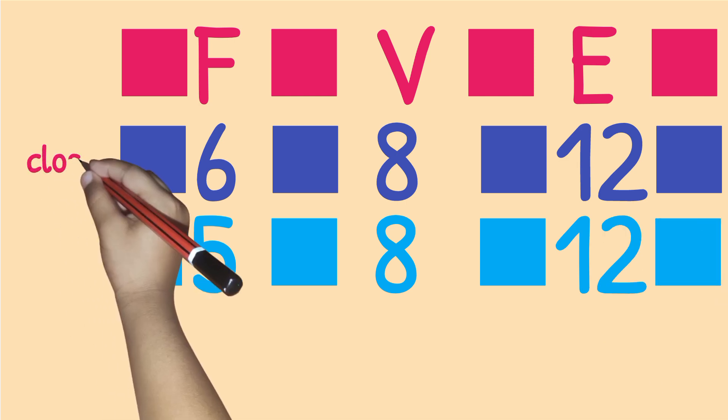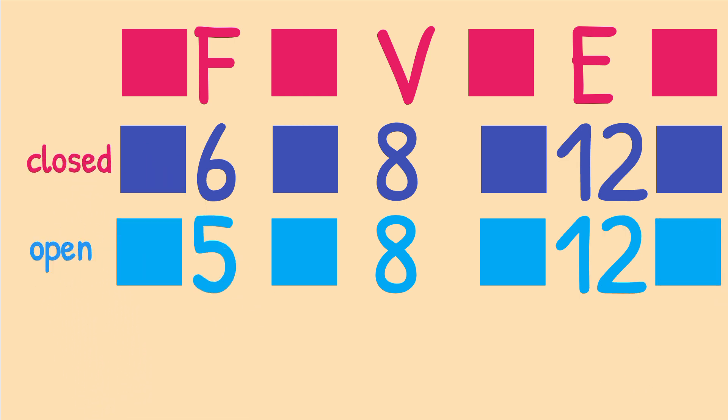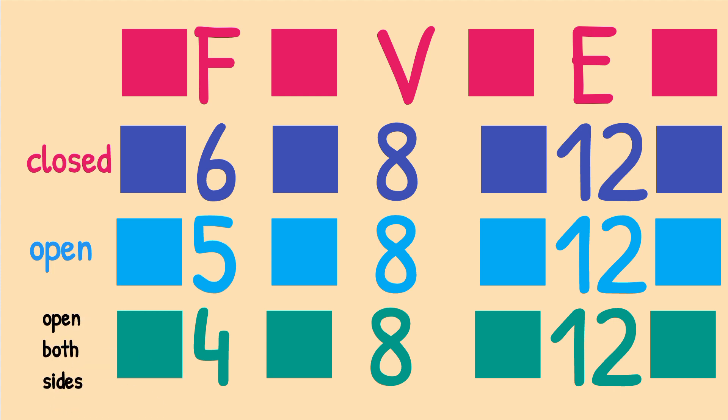We have 12 edges. It was very simple. Just like that. So you can write this formula here, this table. F, V, E. Where closed is 6, 8, 12. Open is 5, 8, 12. And if it is open both sides, it is 4, 8, 12.